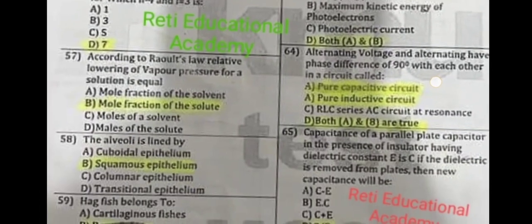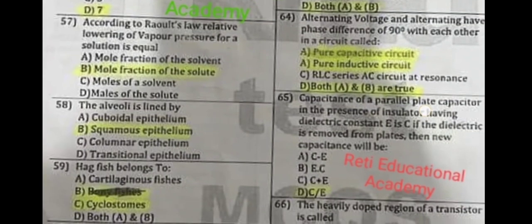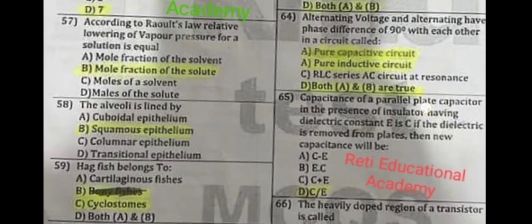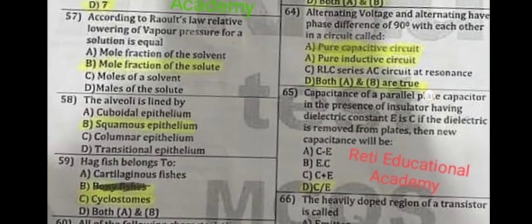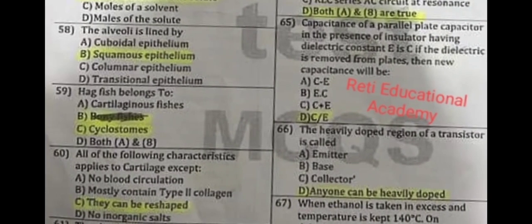Question number 57: According to Raoult's law, relative lowering of vapor pressure for a solution is equal to B: the mole fraction of the solute. Question number 58: The oesophagus is lined by squamous epithelium. Question number 59: The fish belonging to cyclostomes.